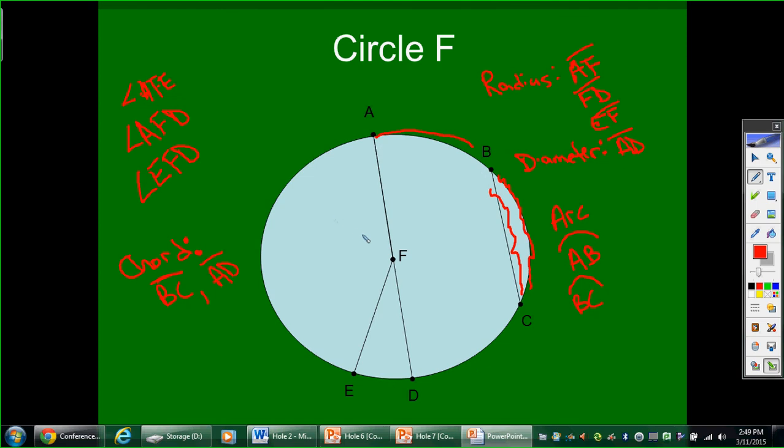A semicircle is a special type of arc that is half of a circle. So the semicircle is arc AD. If I look, I start here, and I go all the way around the outside of the circle halfway, until I get to my D. So semi means half of the circle. Arc AD would be a semicircle.